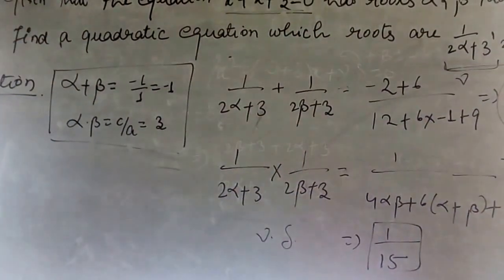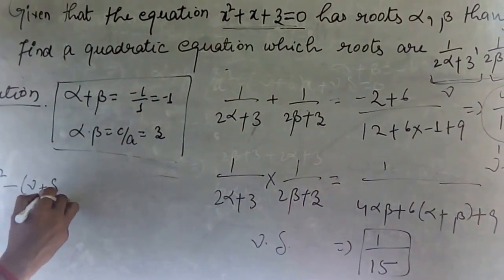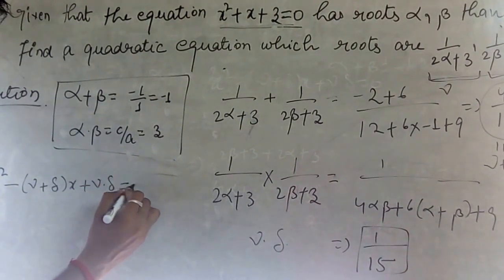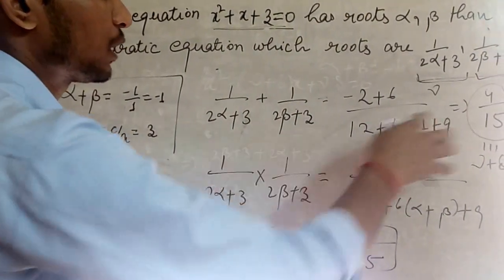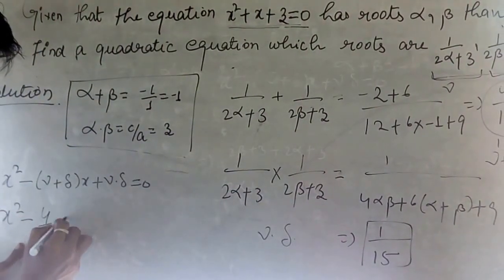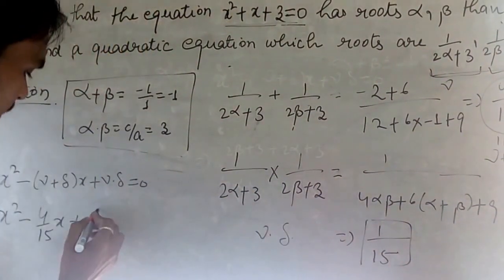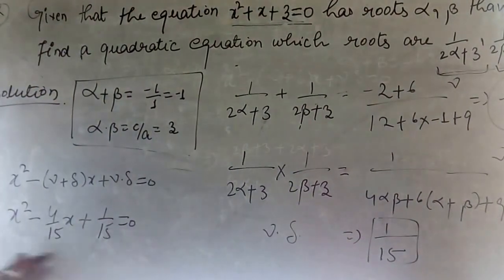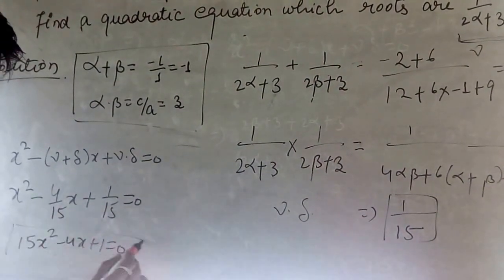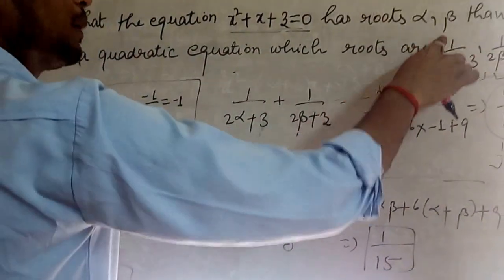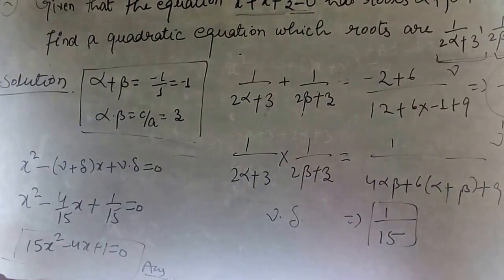Now we have gamma + delta = 4/15 and gamma × delta = 1/15. Using the formula x² − (gamma + delta)x + (gamma × delta) = 0, we substitute to get x² − (4/15)x + (1/15) = 0. Multiplying through by 15, we obtain 15x² − 4x + 1 = 0. This is the equation whose roots are 1/(2alpha + 3) and 1/(2beta + 3). Thank you everyone.